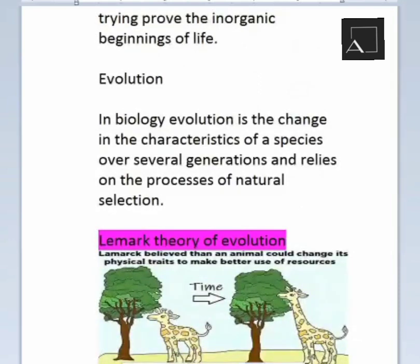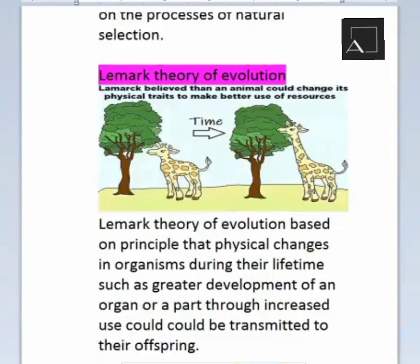In biology, evolution is the change in the characteristics of a species over several generations, and it relies on the process of natural selection. Everyone learns about evolution from school — from early science books. What is evolution? It is the change that happens in living organisms over generations.